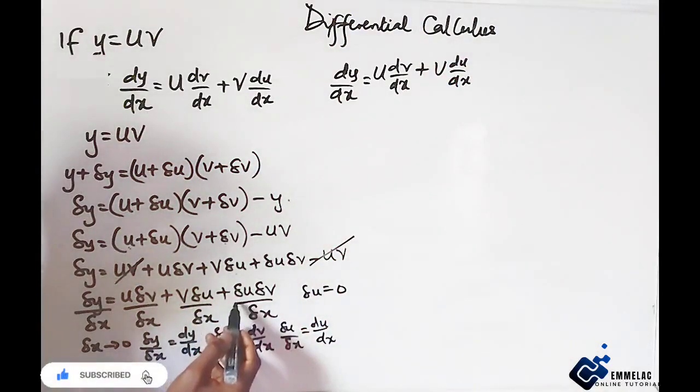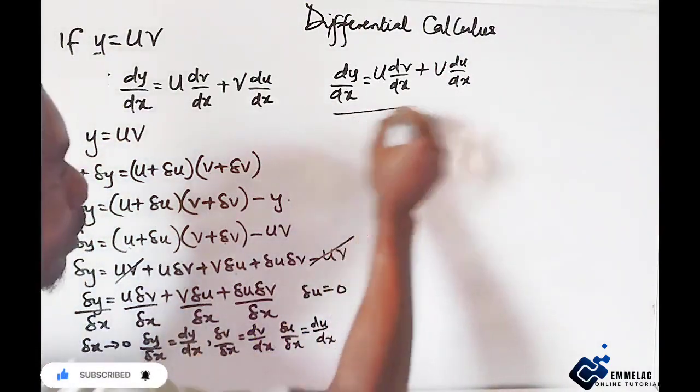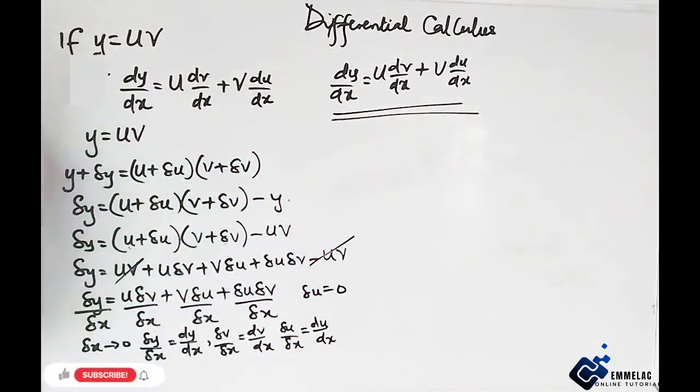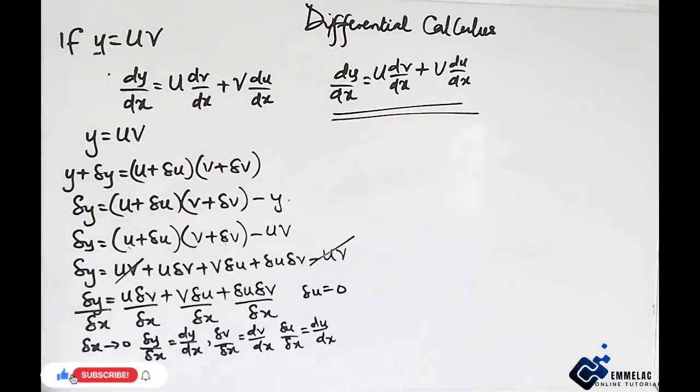Now since this term becomes 0, this whole expression here becomes 0. So we are left with the final equation which gives us the product rule in differential calculus.